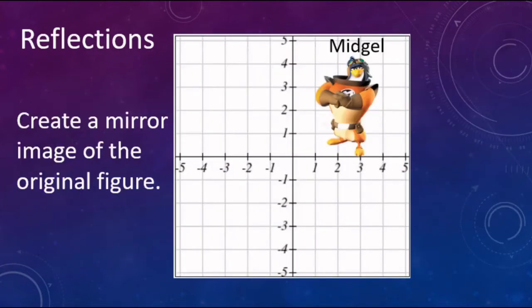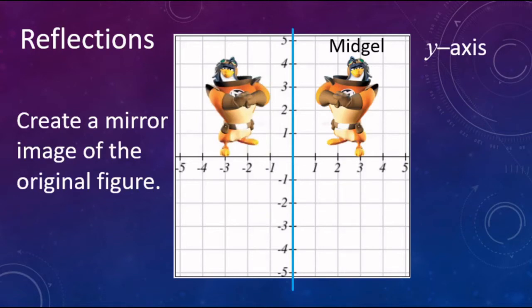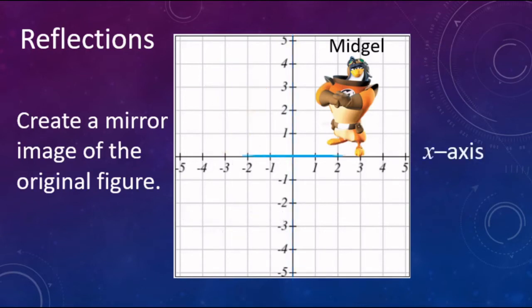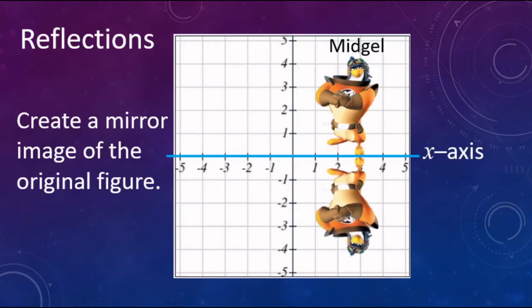Now looking at reflections — reflections are just going to make a mirror image of the original figure. We can take any line and reflect it over. Here, let's look at reflecting over the y-axis. We're going to reflect Midgell over the y-axis. There's the reflected image of Midgell, or Midgell prime. We can also do the x-axis — the first one is kind of like looking in a mirror, and this one's kind of like looking in water. And there's our reflected image of Midgell prime.